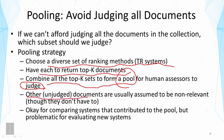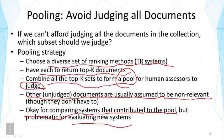The other unjudged documents are usually just assumed to be non-relevant. If the pool is large enough, this assumption is okay. But if the pool is not very large, this has to be reconsidered, and there are other methods to handle such cases. This strategy is generally okay for comparing systems that contributed to the pool. However, it is problematic for evaluating a new system that may not have contributed to the pool, because that new system might be penalized — it might have nominated some relevant documents that have not been judged and are assumed to be non-relevant. That's unfair.